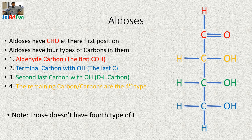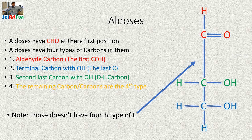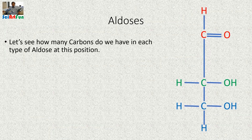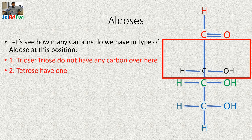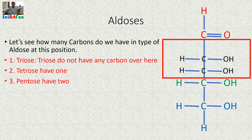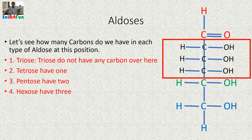Triose doesn't have this fourth type of carbon. Its structure has only three types: the aldehyde carbon, the last carbon, and the penultimate DL carbon. Trioses have no carbons at the fourth position, tetroses have one carbon there, pentoses have two carbons, and hexoses have three carbons at this position.